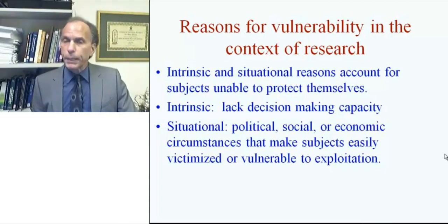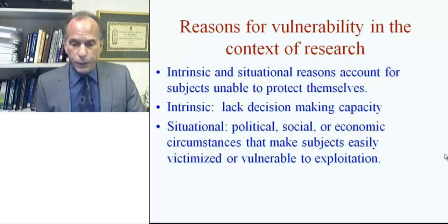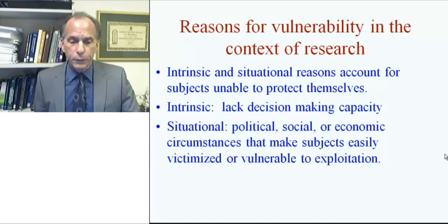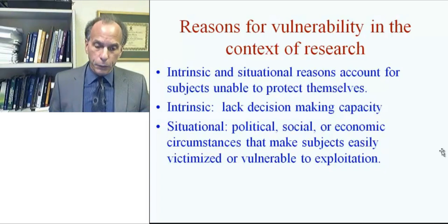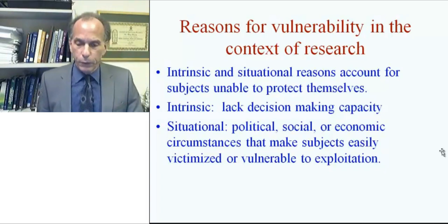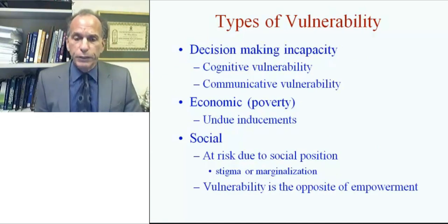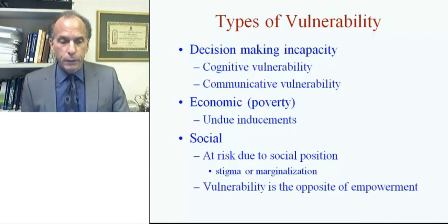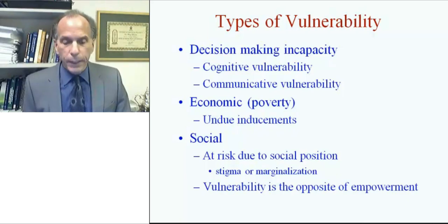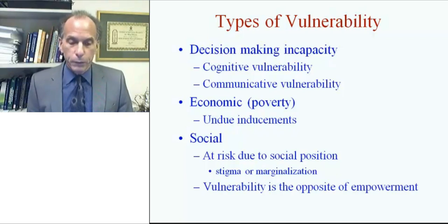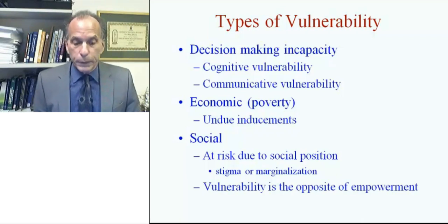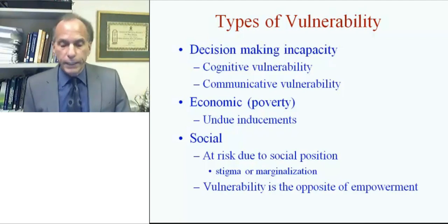Intrinsic refers to a lack of decision-making capacity and hence the inability to give informed consent for themselves. Then there are situational reasons, and these include political, social, or economic circumstances that make subjects easily victimized or vulnerable to exploitation. The intrinsic vulnerability refers to a lack of decision-making ability, and situational reasons include economic reasons — that is poverty — which could lead to undue inducements. Then we have social vulnerability: essentially one is at risk due to their social position that causes stigma or marginalization.